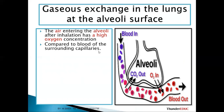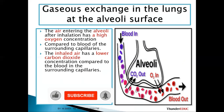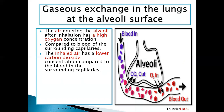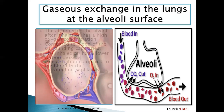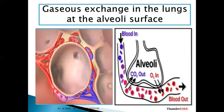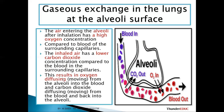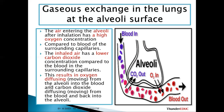Compared to the blood surrounding the capillaries, the inhaled air has a lower carbon dioxide concentration. Therefore carbon dioxide cannot diffuse in. Remember: diffusion is the movement of molecules from a region of high concentration to a region of low concentration. There is a high concentration of oxygen in the alveoli and low concentration in the blood, and high carbon dioxide in the blood and low in the lungs. So diffusion follows the concentration gradient.